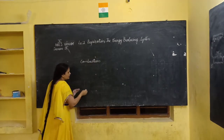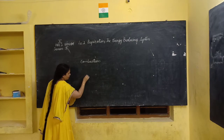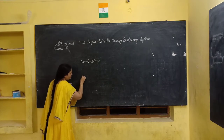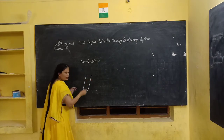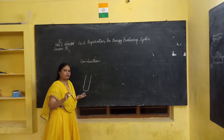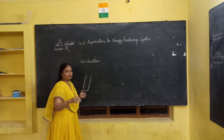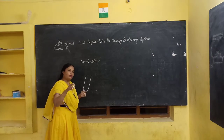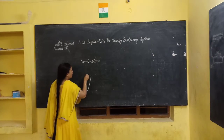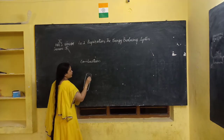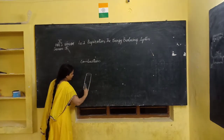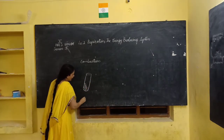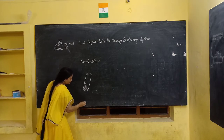So let us take this setup: take a crucible and then take glucose in it. And then take a Bunsen burner and light it.